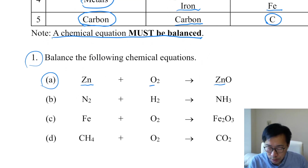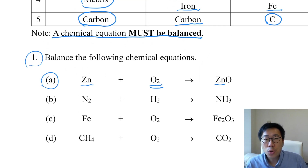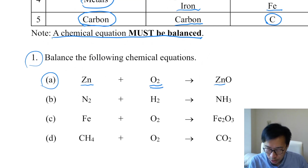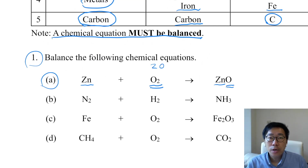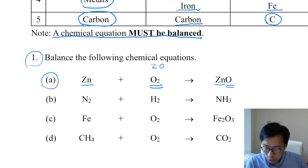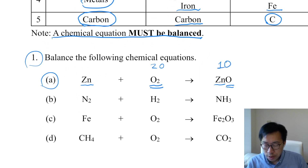However, on the left we found two O atoms, but on the right-hand side I just found one O atom. That means the number of O atoms is not balanced right now.